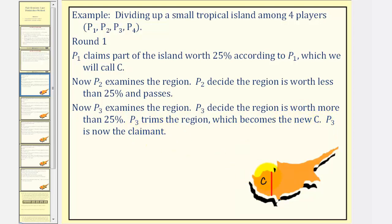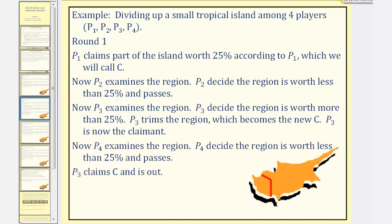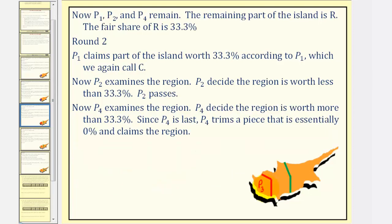So if player three trims the region, it may look something like this — this is the new C and player three is the claimant. It still goes to player four, who decides the region is worth less than twenty-five percent and passes. Therefore player three claims C and is out. Now players one, two, and four remain.